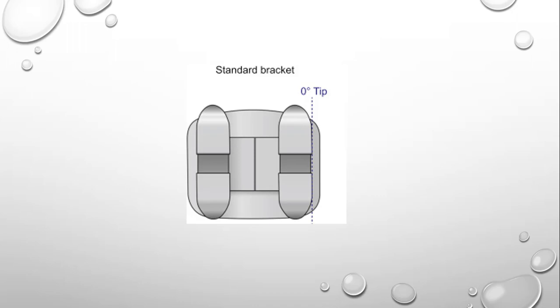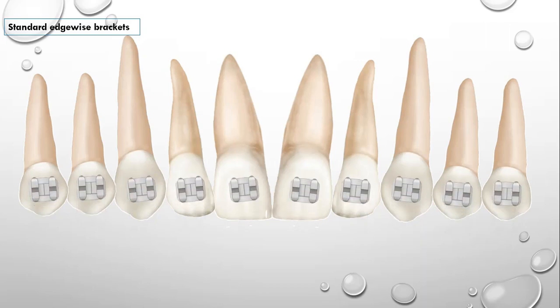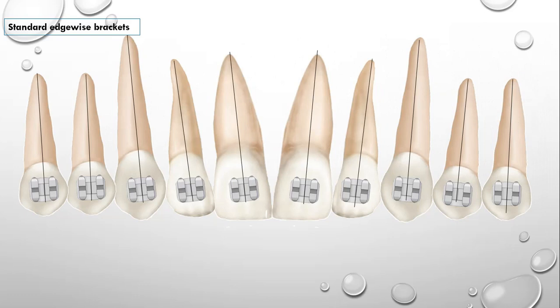Coming to our main topic — what are second order bends, which we used to give when using standard edgewise brackets. In the standard edgewise bracket, the bracket is pretty straight and there is no angulation. There is an orientation mark, and when we bond any bracket on the tooth, this mark should coincide with the long axis of the tooth. For example, if a patient with ideal occlusion insists on getting braces and you only had standard edgewise brackets, you would bond those brackets keeping in mind the orientation line and the long axis of the teeth.